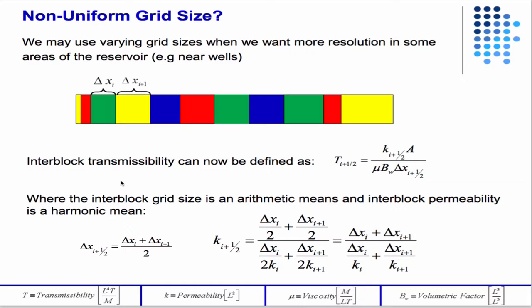So then we also talked about varying delta x, and in a one-dimensional reservoir the reason you might want to do this is around wells. In a two-dimensional reservoir you might have other features like fractures or something where you want more resolution, and we'll talk about how that looks in a two-dimensional reservoir soon.